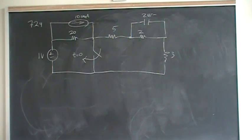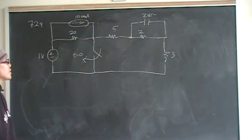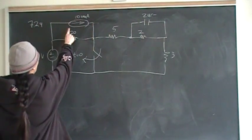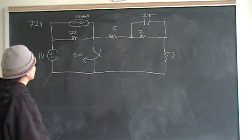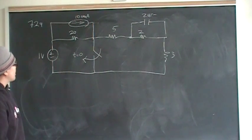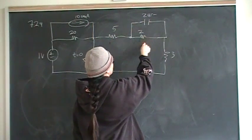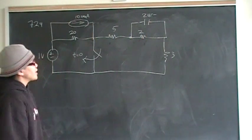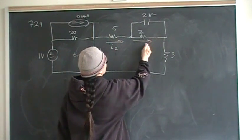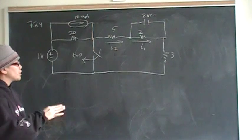Hi guys. This is problem 24 from chapter 7, in the section on the natural response of an RC circuit. We have a 100 milliamp independent current source in parallel with a 20-ohm resistor, a 1-volt independent voltage source, a 5-ohm resistor, a 3-ohm and a 2-ohm resistor connected in parallel to a 2-microfarad capacitor. We are looking for currents I2 and I1, and there is a switch that closes at time zero.